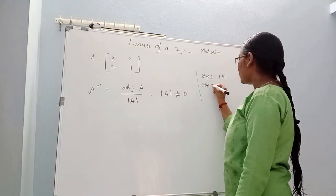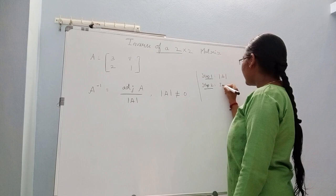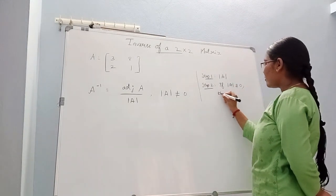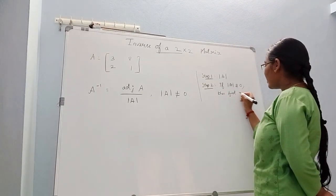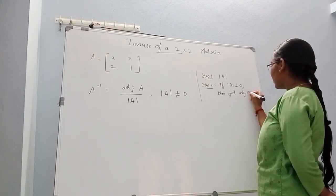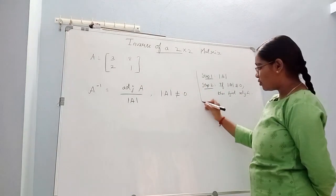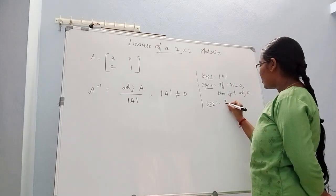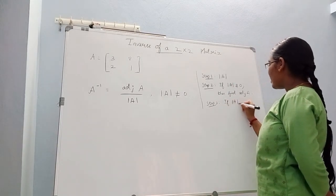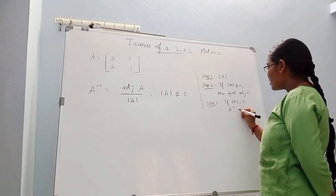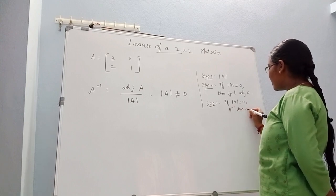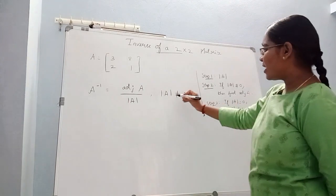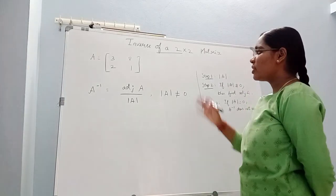Step 2: if determinant of A is not equal to 0, then find adjoint of A. Step 3: if determinant of A is equal to 0, then A inverse does not exist.